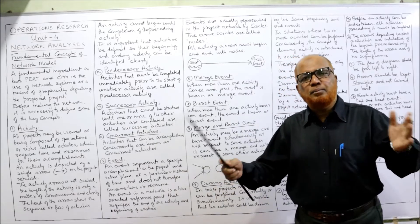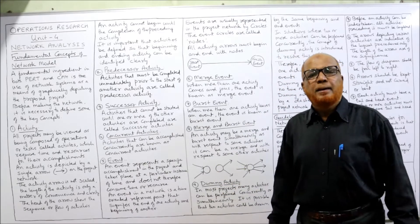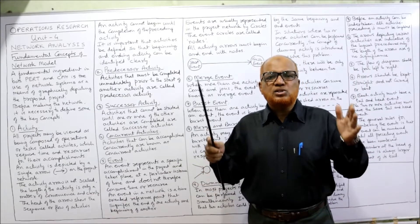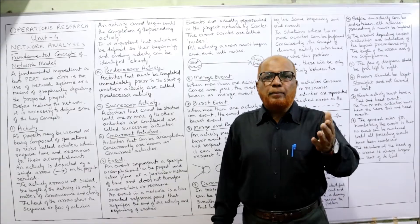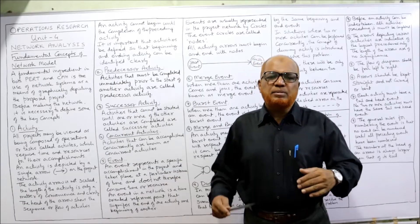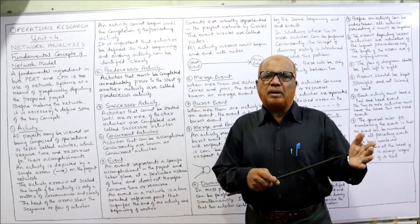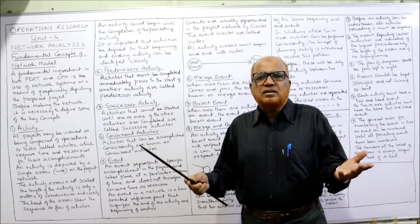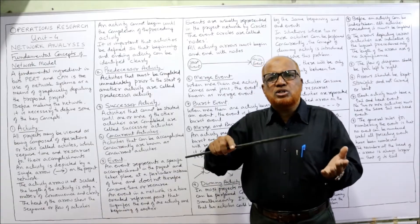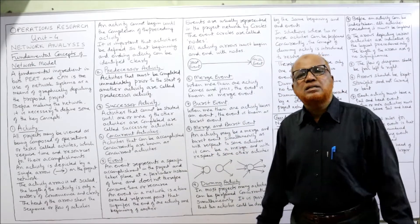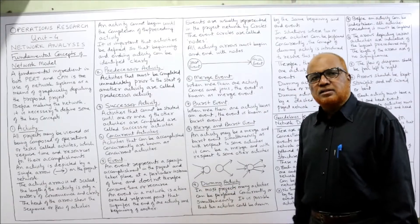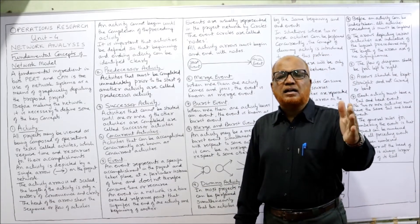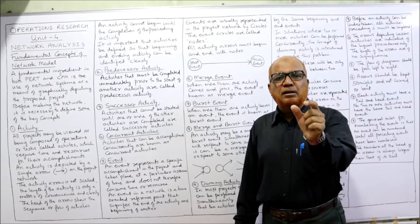A simple example of concurrent activity: in the construction of a building, the plumbing work and electricity work can be done simultaneously. The plumber will do his plumbing work and the electrician will do his electricity work. These two activities do not have any dependency relationship, so both are concurrent activities.